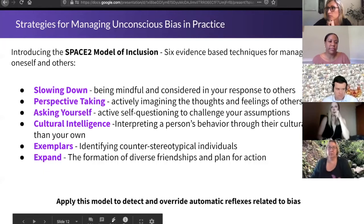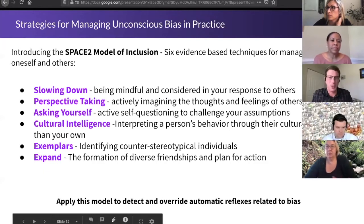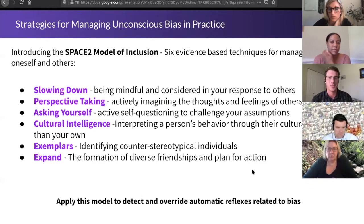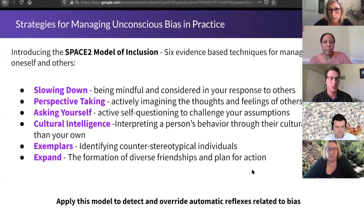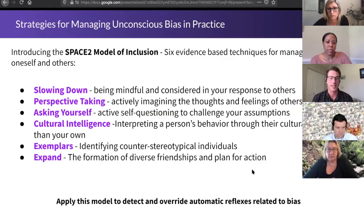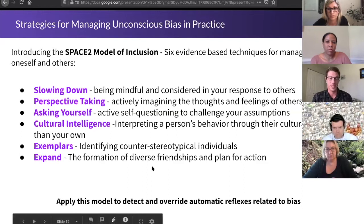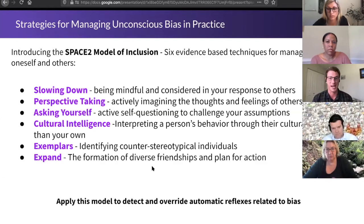And now I'll turn it over to Josh. Thanks, Candice. So really quickly, we talked a lot about managing unconscious bias. I wanted to introduce you all to the SPACE2 model of inclusion. This is a great way, if you find yourself in a situation where you recognize you're applying unconscious bias, to use the model to self-reflect and create self-awareness. It really starts with slowing down, being mindful and considered in your response to others. Put yourself in the other person's shoes and be empathetic — empathy is a thread to managing your bias. Then ask yourself questions to challenge your assumptions.